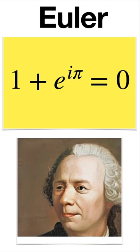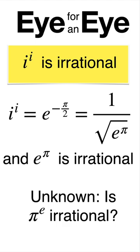A beautiful formula of Euler. What is i to the i? i to the i is irrational.